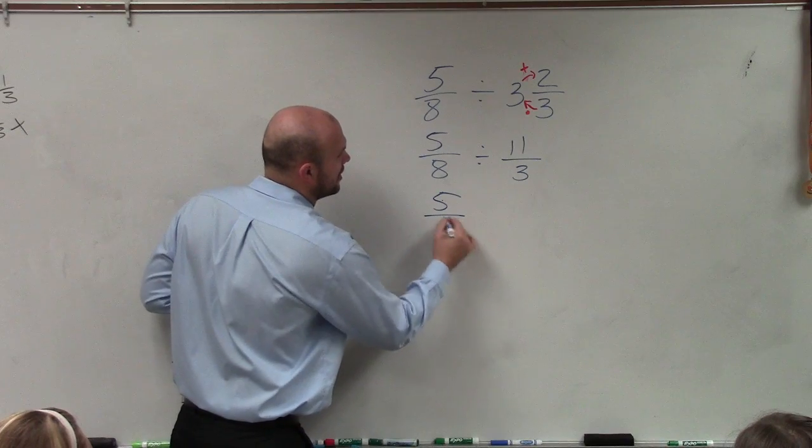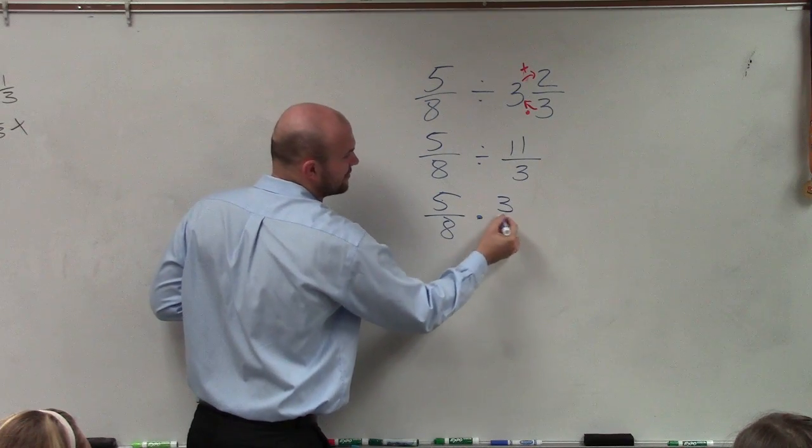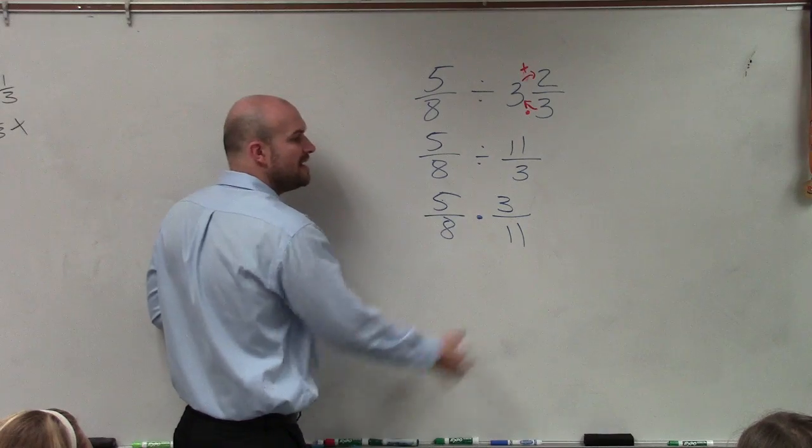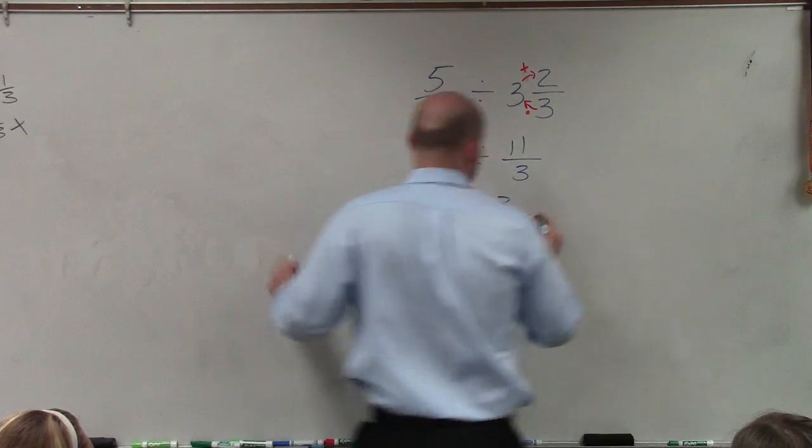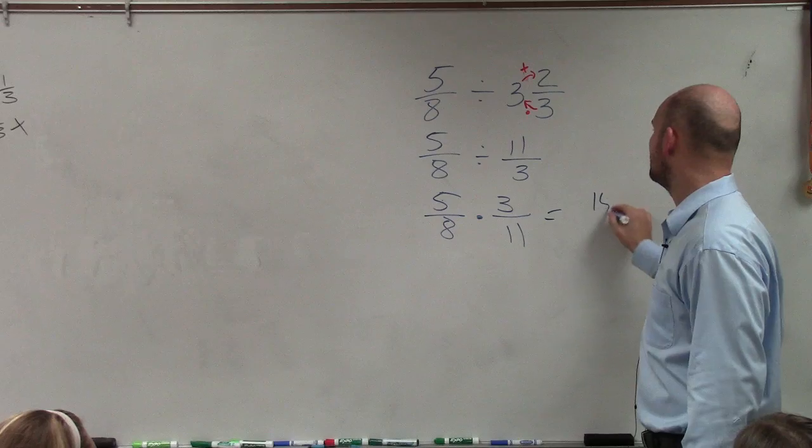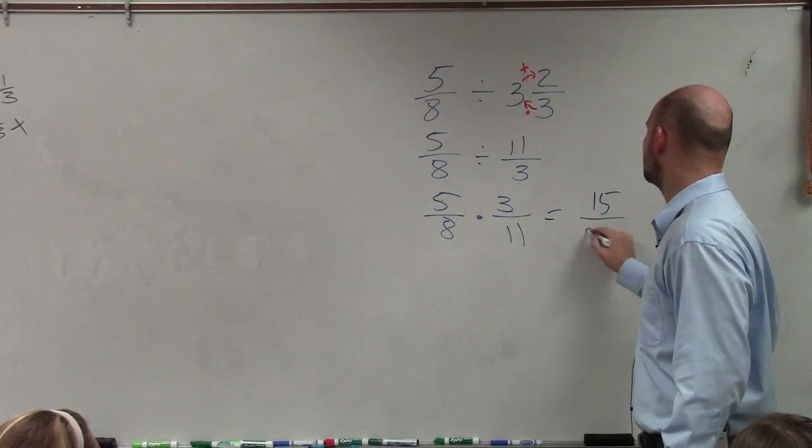So to multiply, all I'm simply going to do is flip my divisor, which would be 3/11, and then apply the operation of multiplying, which would be multiply across. 5 times 3 is 15, 8 times 11 is 88.